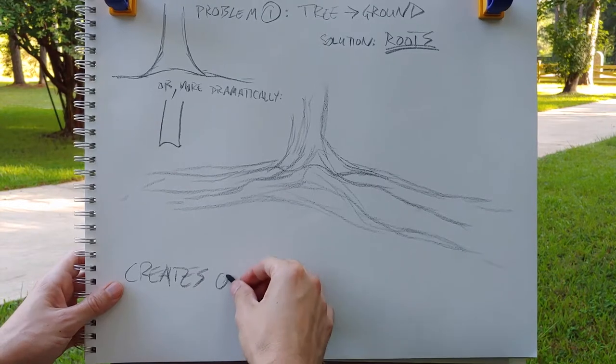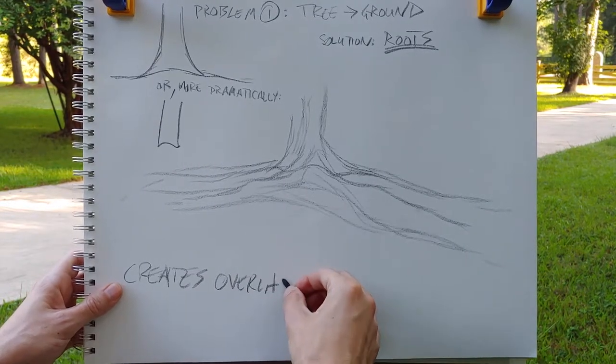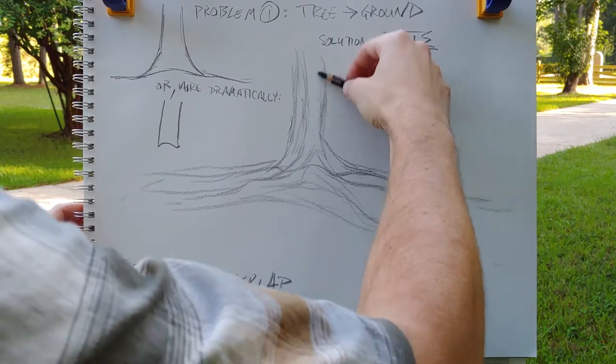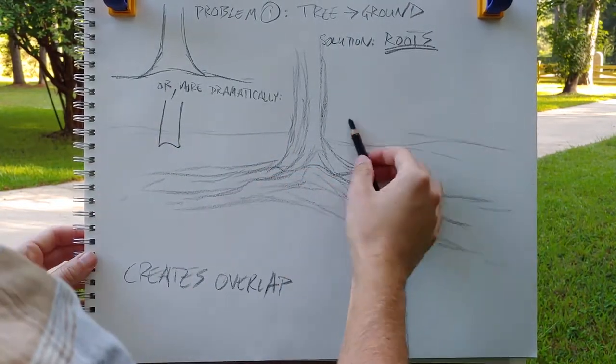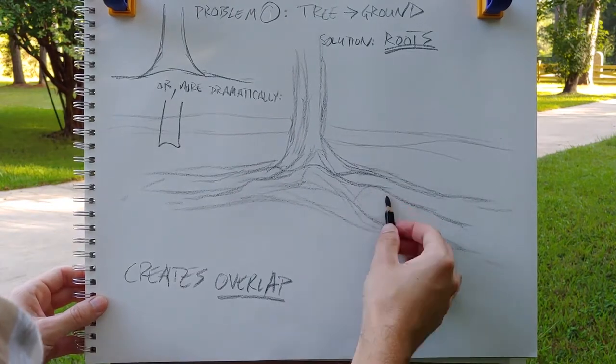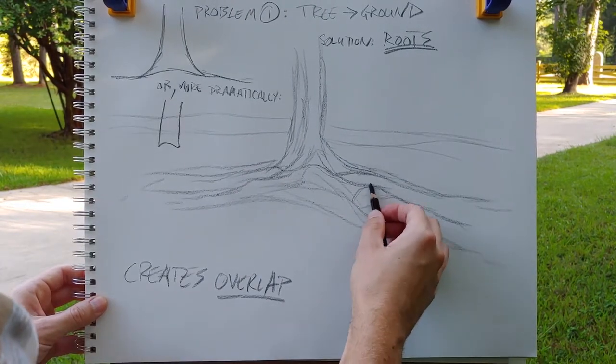And what this does is it creates a sense of overlap on the ground and it makes it seem like the tree is connected to the ground under the ground and that also gives your ground a little bit of interest. As you begin to develop your image that's going to help a lot.